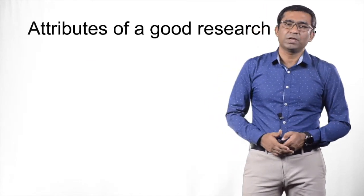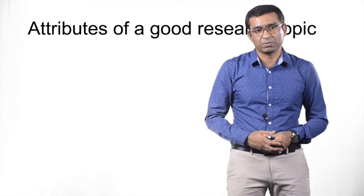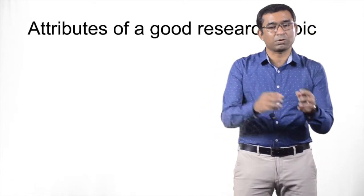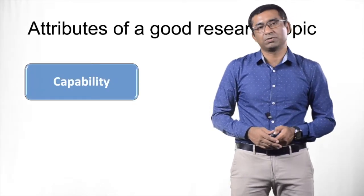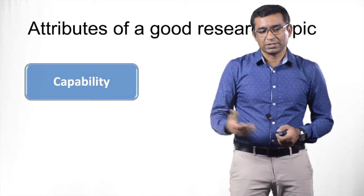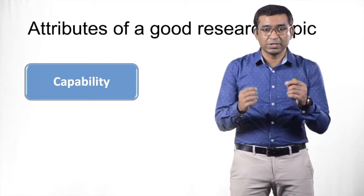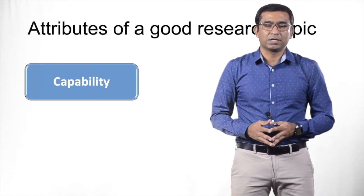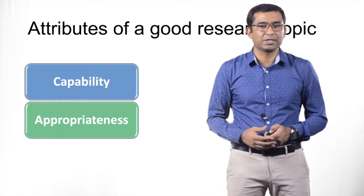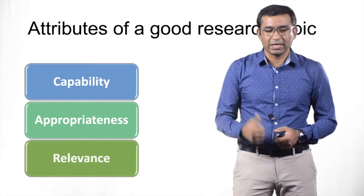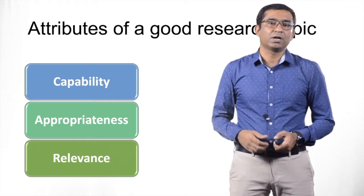Let us start with the research attributes. What are the major attributes or characteristics of any research topic through which we can consider it a very good research area to be studied? There are three major components on which we decide whether this area is considerably good or not. The first thing is your capabilities, the second thing is appropriateness, and the third thing is relevance.